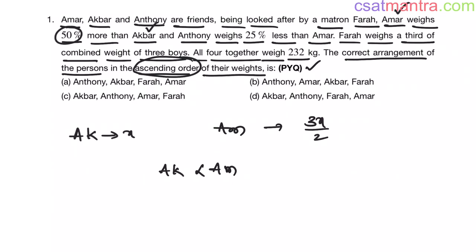If you observe, Ammar's weight is greater than Akbar's weight. In option B, it is given that Ammar's weight is less than Akbar's weight — but we have established that Ammar's weight is greater than Akbar's weight. So option B is eliminated.